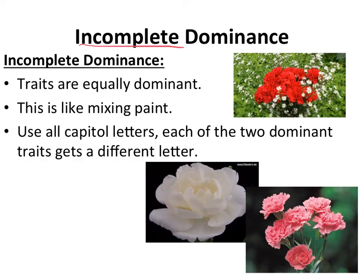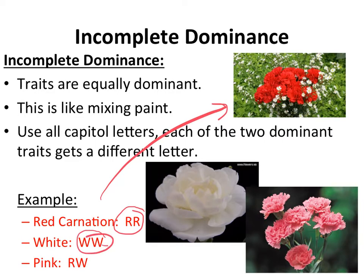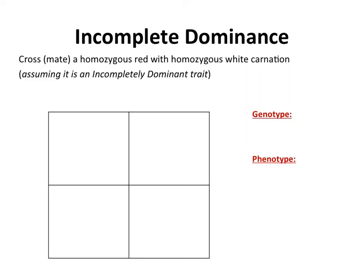With incomplete dominance, we actually use all capital letters, and you get to mix letters. Whereas before we always said use capital and lowercase, now you can use a letter that stands for the actual trait or phenotype. Notice that the homozygous condition of RR is for red, and the homozygous WW is for white, because that individual received an allele for whiteness from both parents. However, if you receive a heterozygous genotype — different alleles from each parent for petal color — you'll get an intermediate. In this case, pink petals.